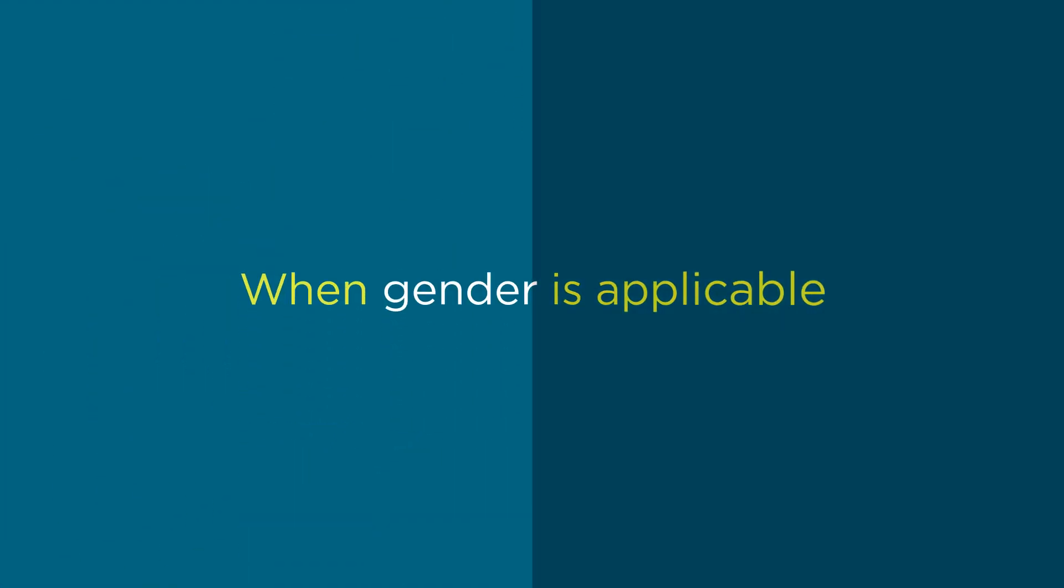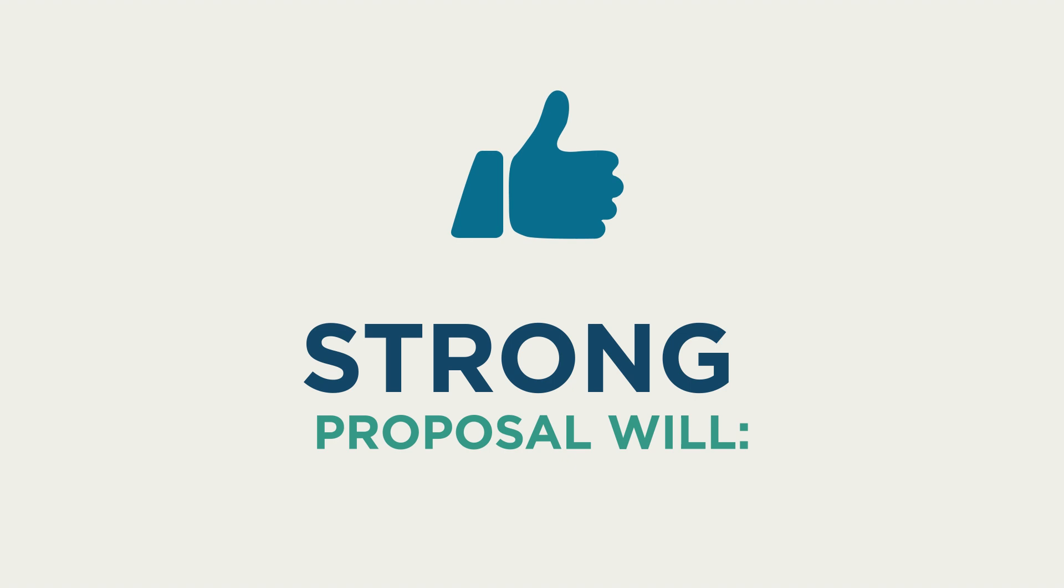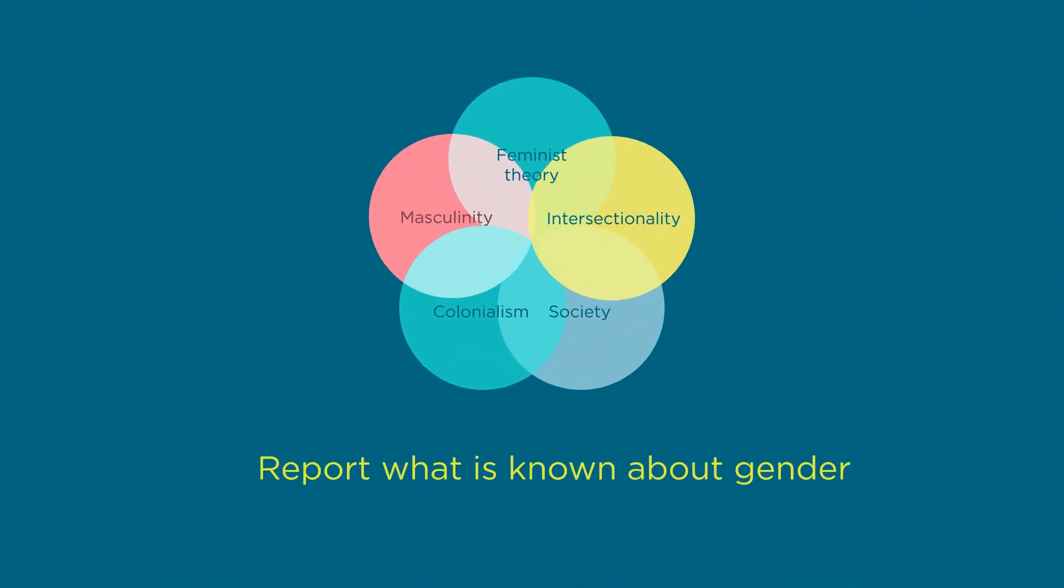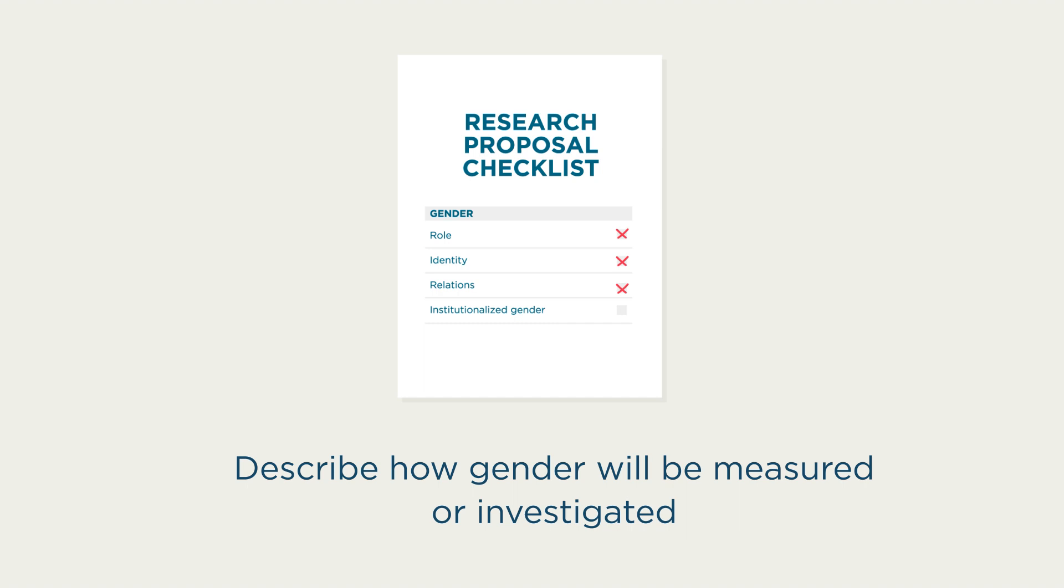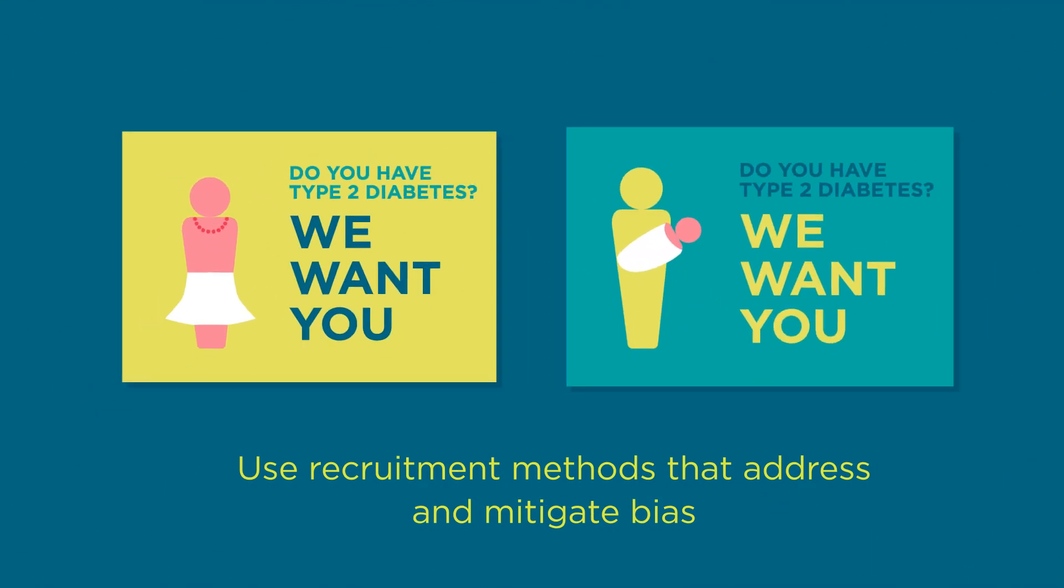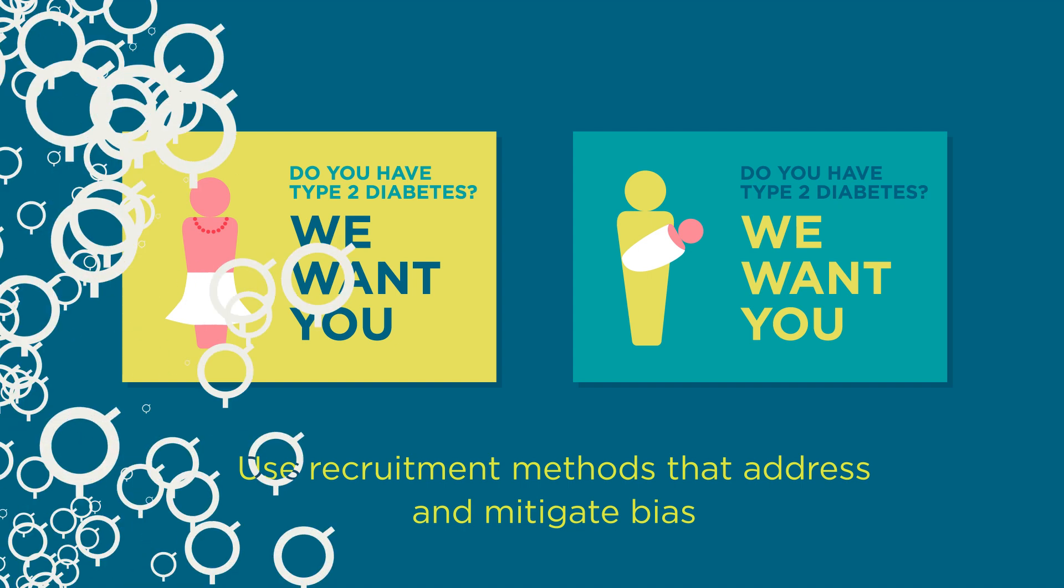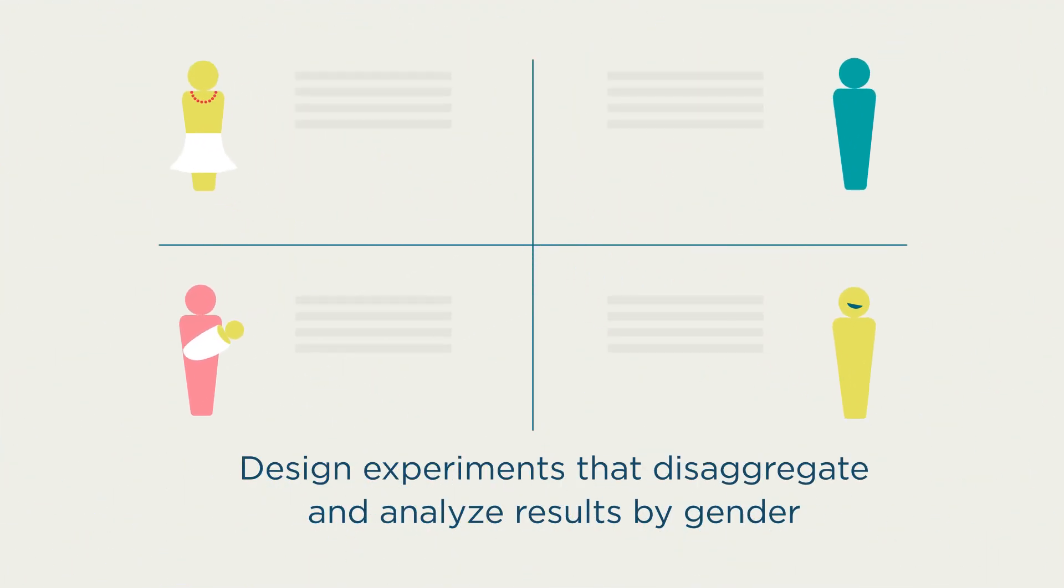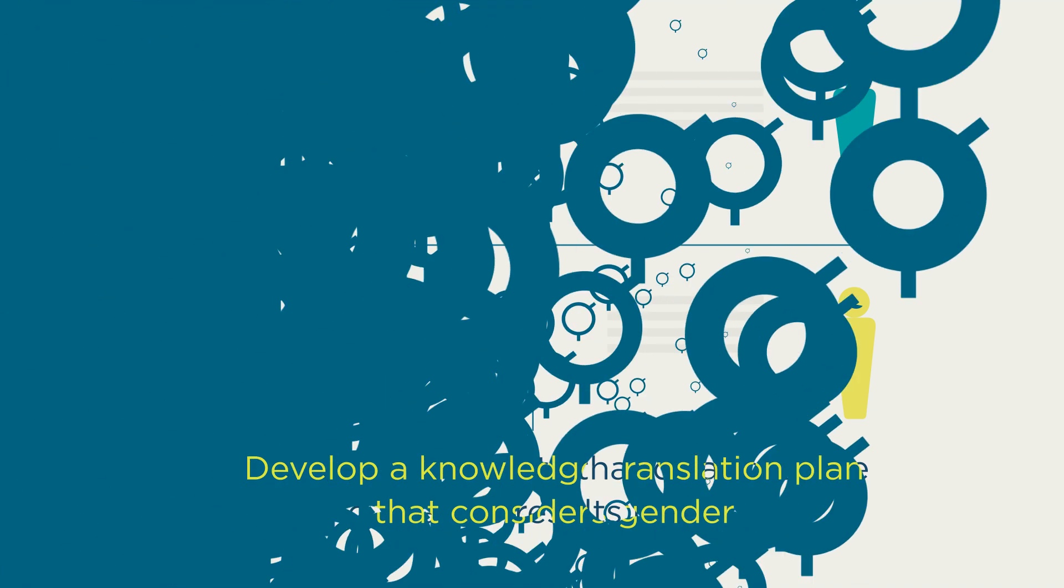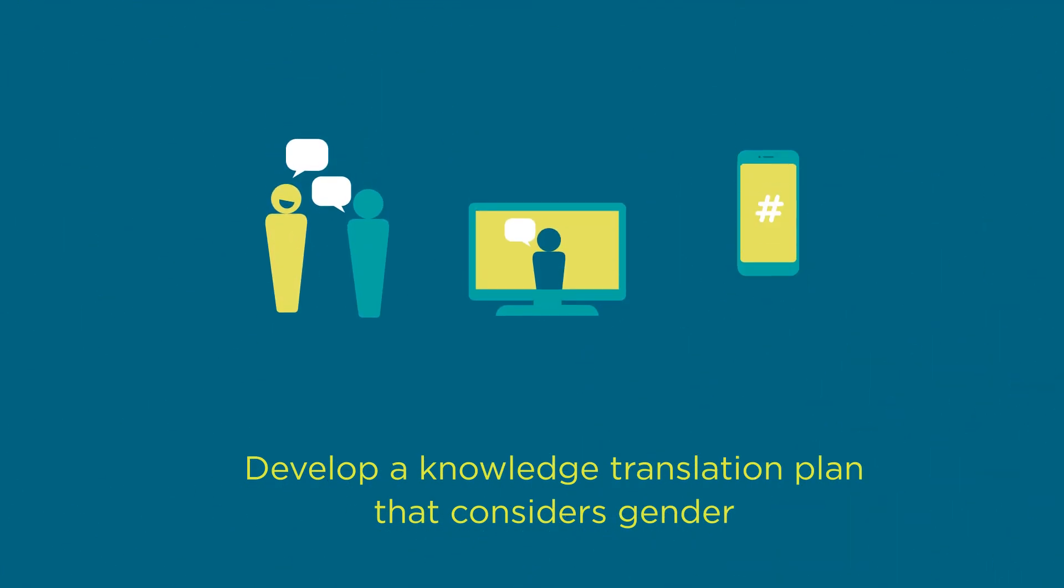When it is applicable, a strong research proposal that effectively integrates gender will report what is known about gender, describe how gender will be measured or investigated, use recruitment methods that address and mitigate bias, design experiments that disaggregate and analyze results by gender, and develop a knowledge translation plan that considers gender.